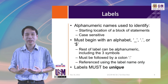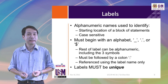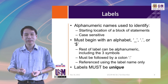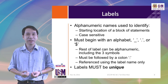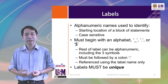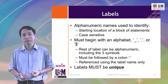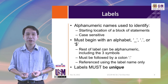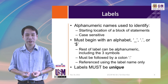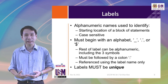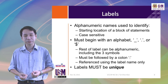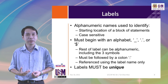Labels are alphanumeric names used to identify the starting location of a block of statements, and they are case sensitive — meaning there is a difference between lowercase 'a' and uppercase 'A' in a label. They must begin with an alphabet, an underscore, a period, or a dollar sign. The rest of the label can be alphanumeric (a to z, 0 to 9) including the three symbols underscore, period, or dollar sign. Finally, the label must be followed by a colon. When using the label as a reference from another location in the program, we do not include the colon — we only use the name as defined.